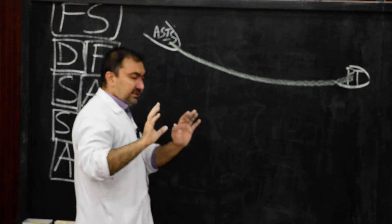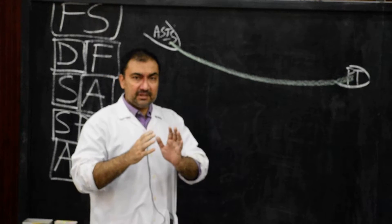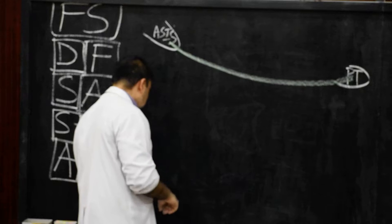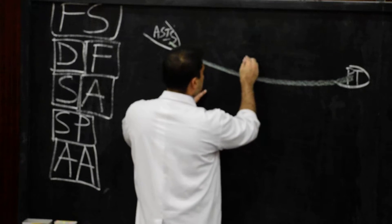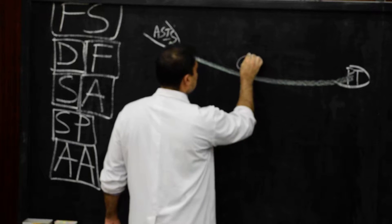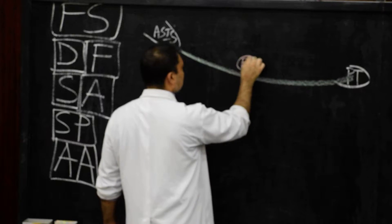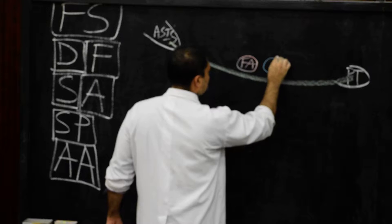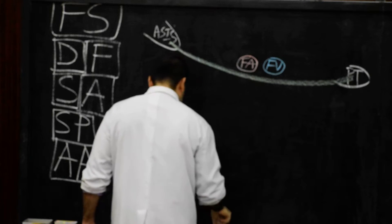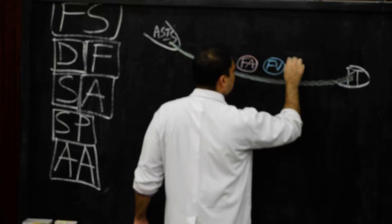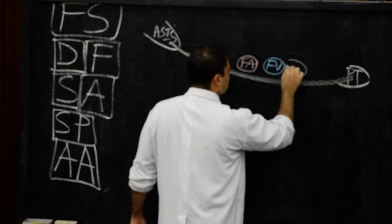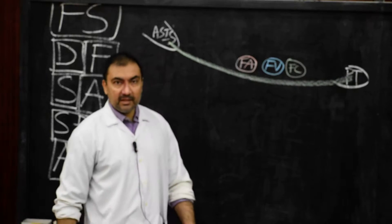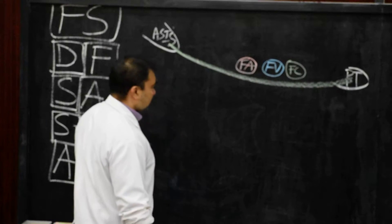Since we have discussed the definition and formation, let us draw the femoral sheath now. The first structure on the extreme lateral side is the femoral artery. The intermediate structure is the femoral vein. The medial-most structure is the femoral canal, which will be empty at this point. After drawing these three structures, we are going to extend the artery and vein downwards behind the inguinal ligament.